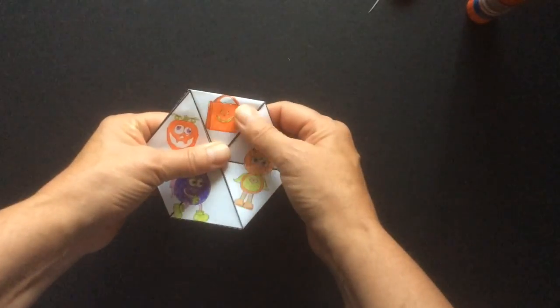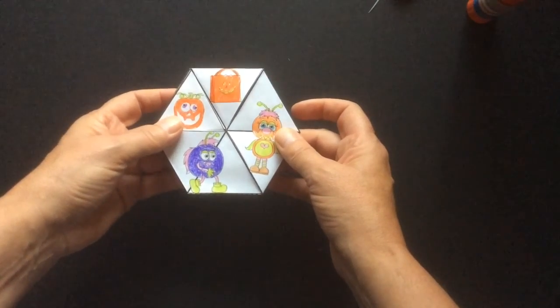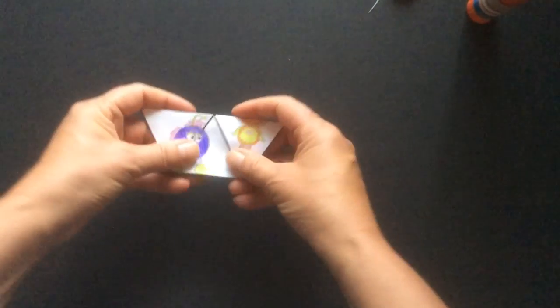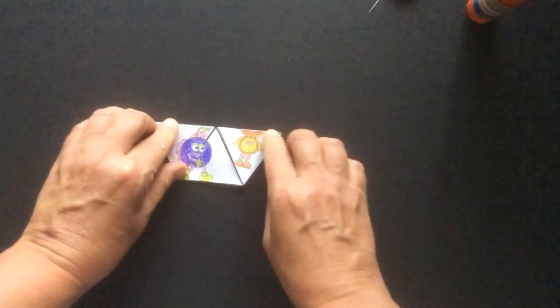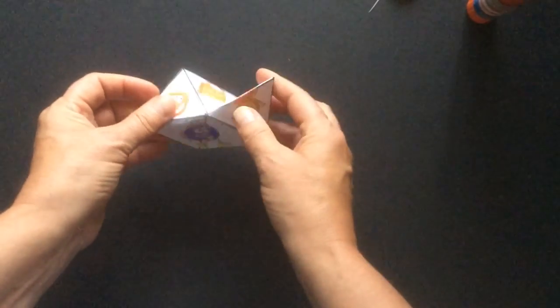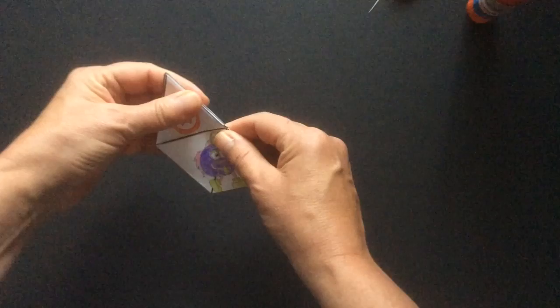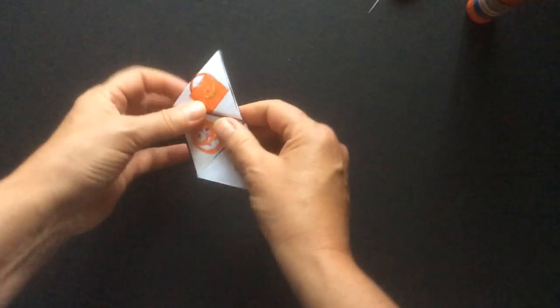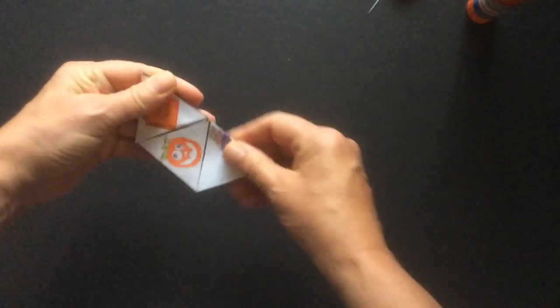Again, yours might look different than mine because you have a different template. Let's re-crease all our edges again. So starting with the horizontal one. Re-crease. And then the two vertical ones. Okay. Good. Crease on that side. And on this side.